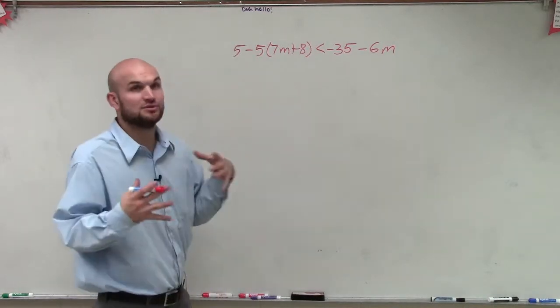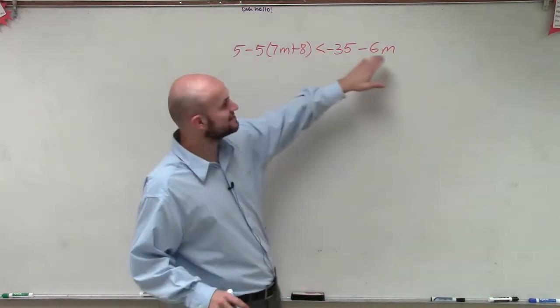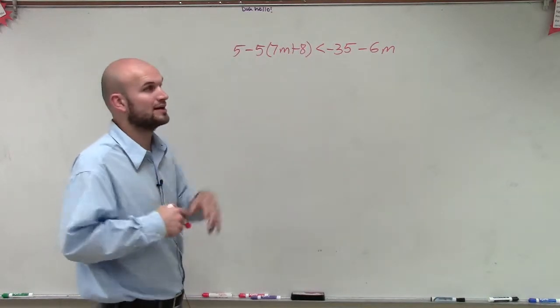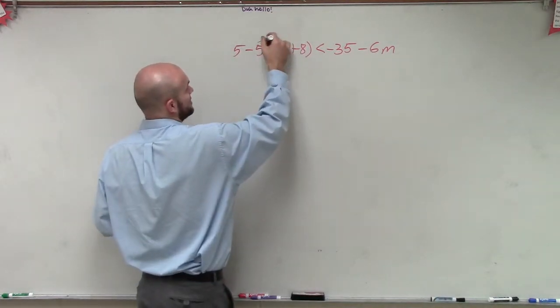So the first thing we need to do is we need to get our variables to the same side, right? We have a variable on the left side and the right side. But before that, we have to simplify. So therefore, I'm going to apply distributive property.